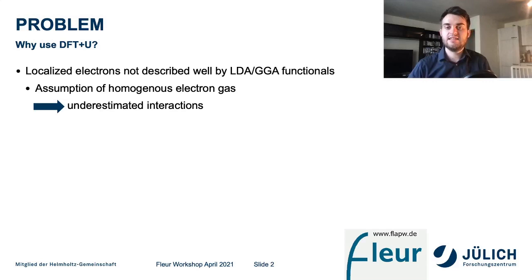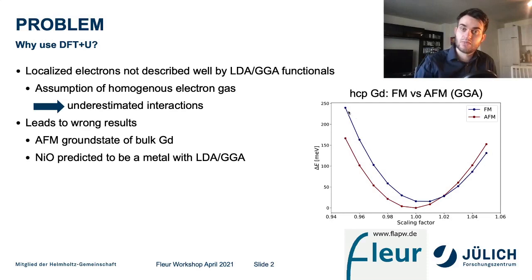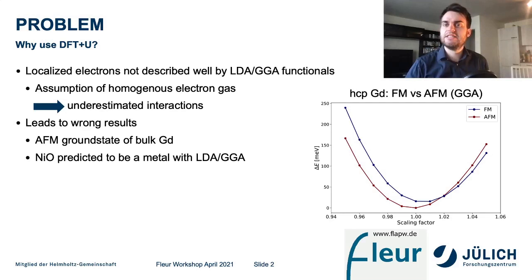This leads to wrong results for many systems containing localized electrons. For example, the magnetic ground state of bulk gadolinium is found to be antiferromagnetic with LDA or GGA. On the right side you see a plot of volume scaling versus total energy with GGA of hexagonal close-packed gadolinium. The antiferromagnetic line is lower in energy than the ferromagnetic line. Also, materials like nickel oxide are predicted to be a metal with LDA or GGA, but are found to be insulating in nature.